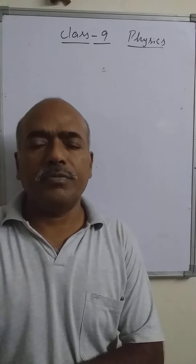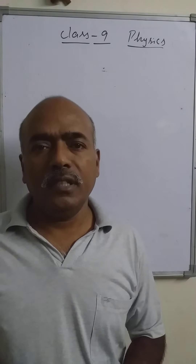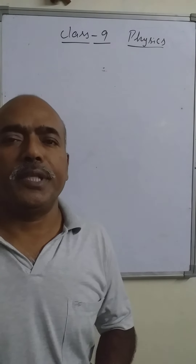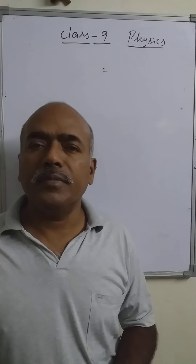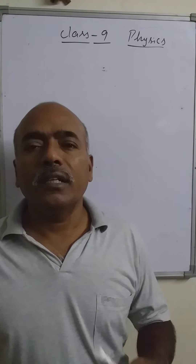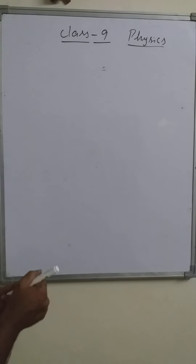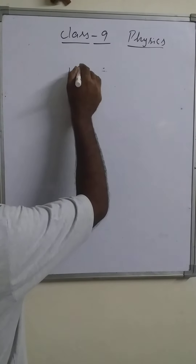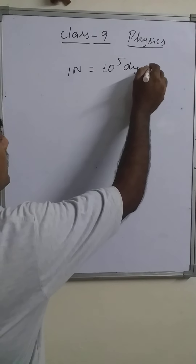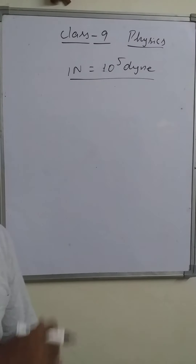There are two units for force: the CGS unit and the SI unit. In the SI system the unit is Newton. In the CGS system the unit is dyne, and the relation between Newton and dyne is: 1 Newton force equals 10 to the power 5 dyne. This was discussed in the last session.